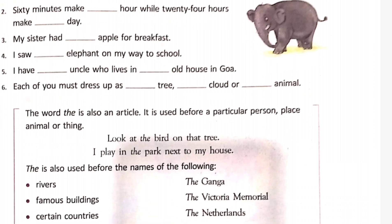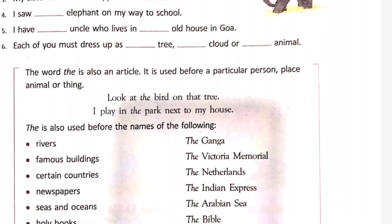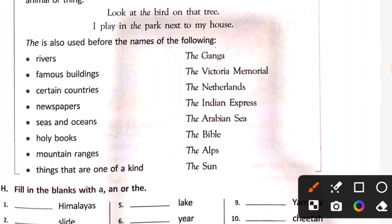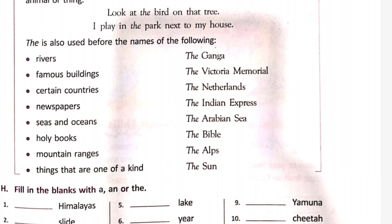The is also an article. 'The' is used before the names of rivers, famous buildings, certain countries, newspapers, seas and oceans, holy books, mountain regions, and things that are of one kind. In all these cases, 'the' is used.